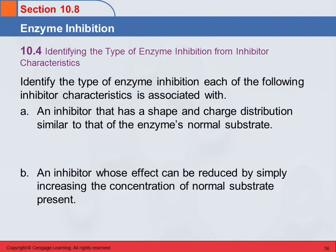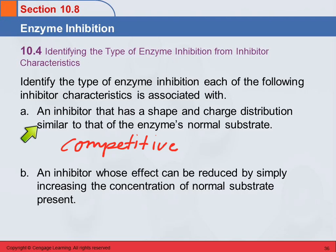Let's identify the type of enzyme inhibition for each example. First: an inhibitor that has a shape and charge distribution similar to that of the enzyme's normal substrate — this is competitive inhibition. It's competitive because the inhibitor is similar to the normal substrate, so it can come in and bond at the active site and compete with the normal substrate. Second: an inhibitor whose effect can be reduced by simply increasing the concentration of normal substrate — that's also competitive inhibition.